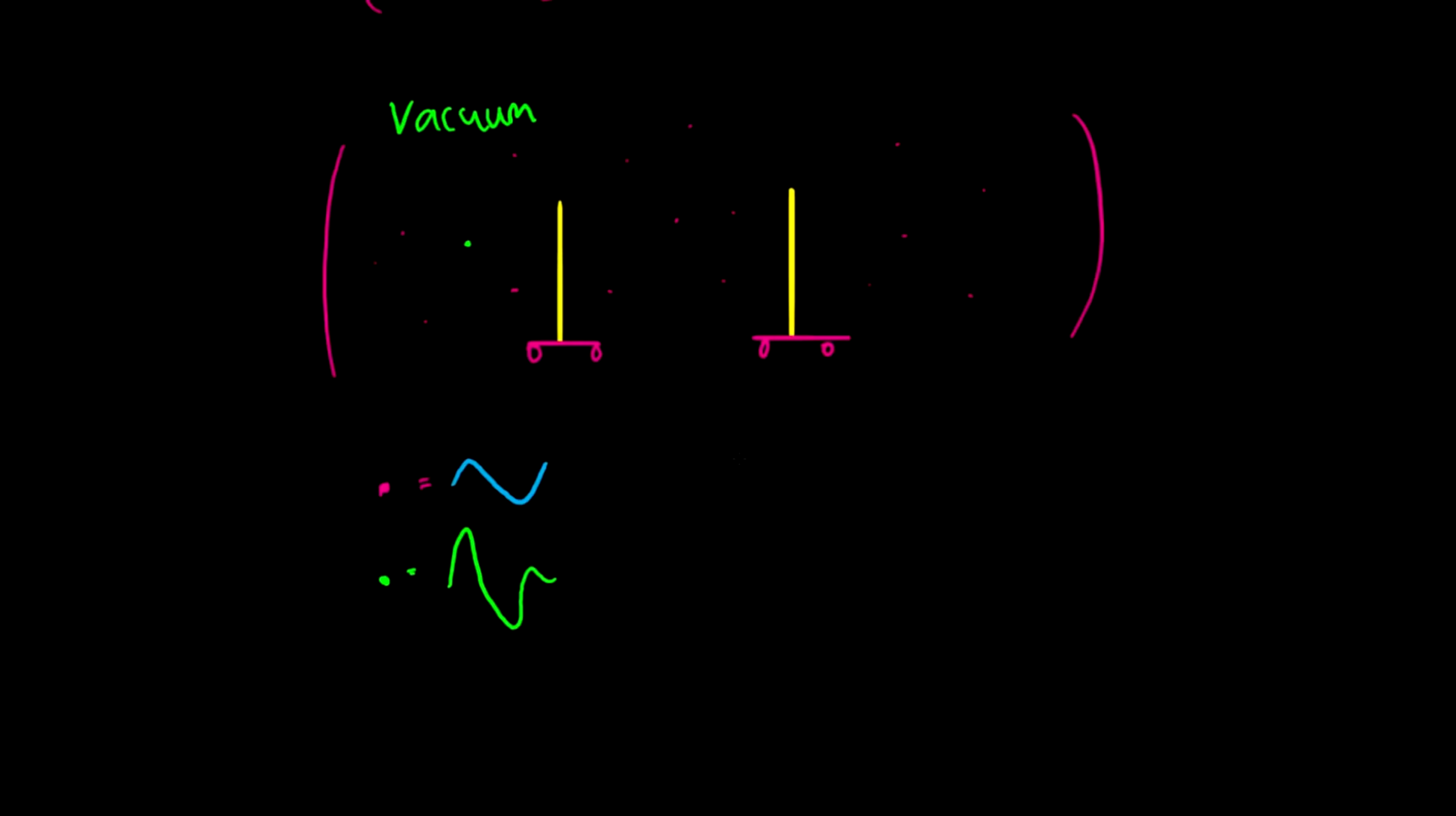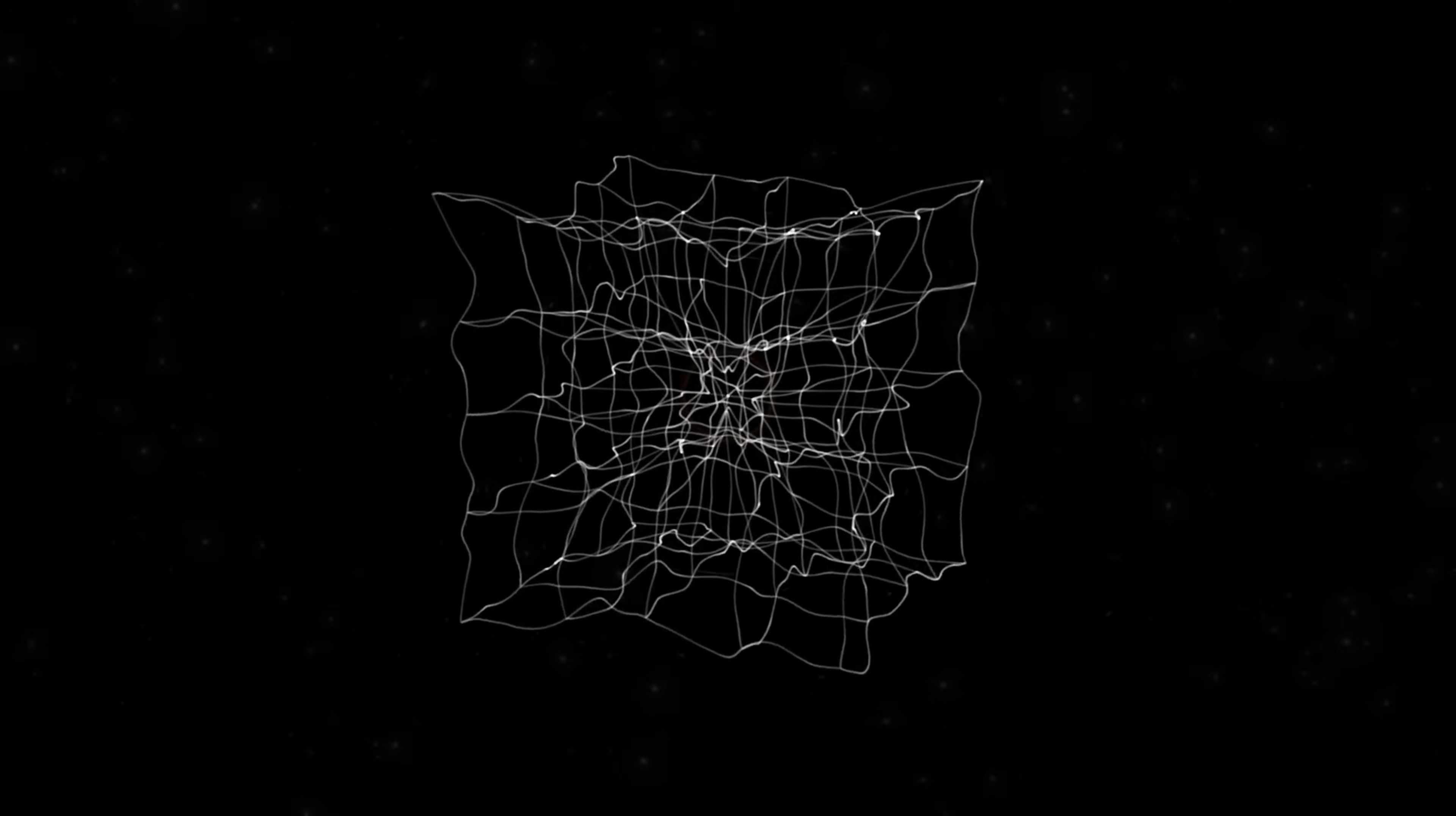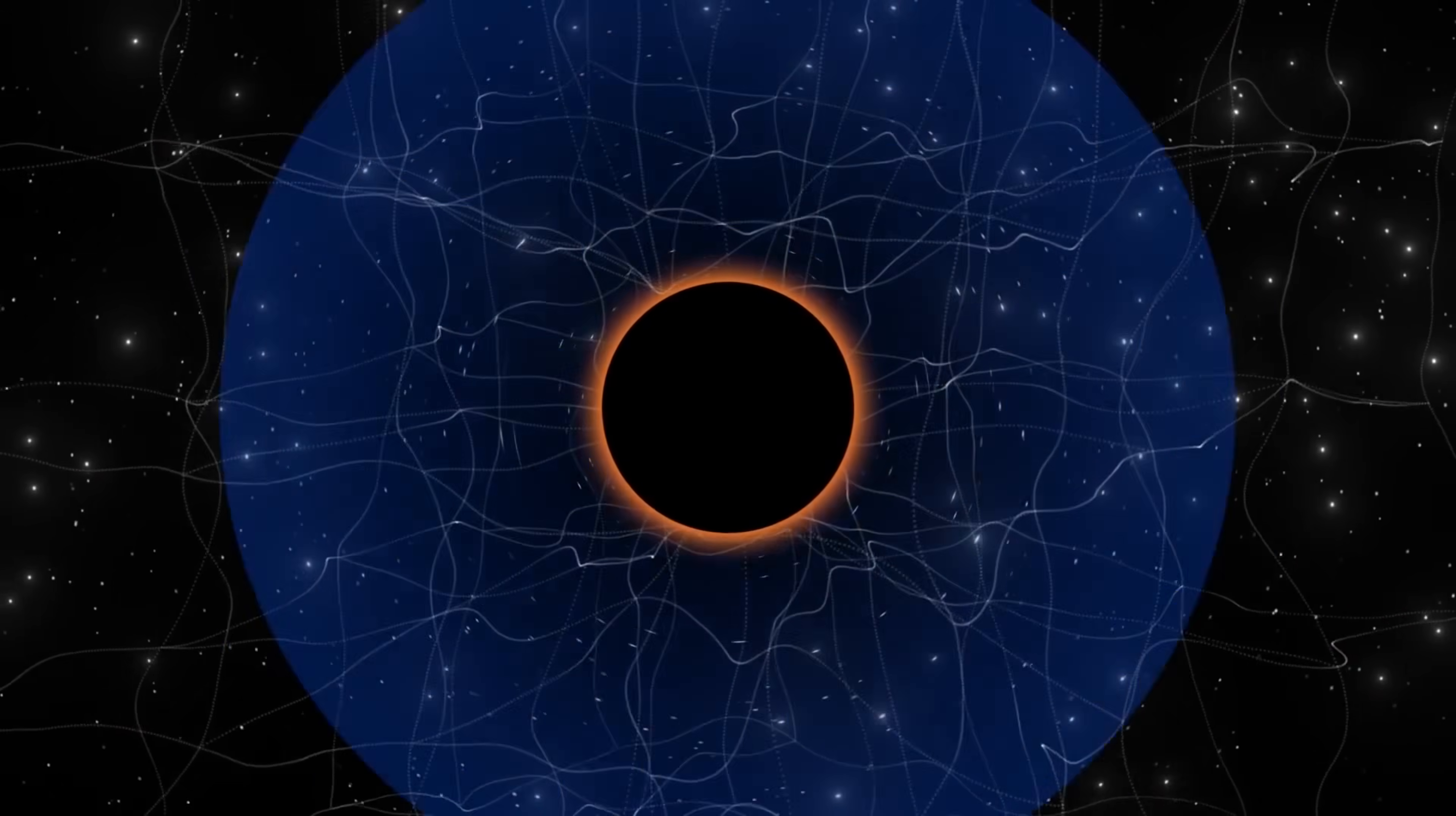One thing to consider is that all fields, even vacuum fields, have some types of fluctuations in them. Fluctuations in the vacuum field are approximately half the energy of a photon traveling through it. What's really interesting about the Casimir effect is that there's a bit of excitement about how this will fit into a large extra dimensional unified field theory of fundamental forces.